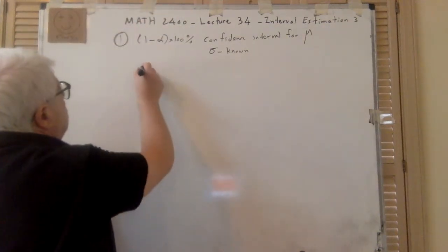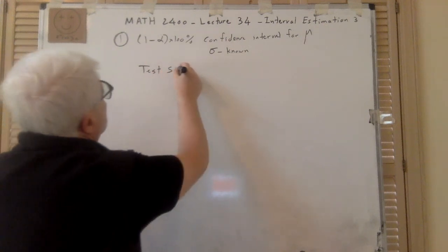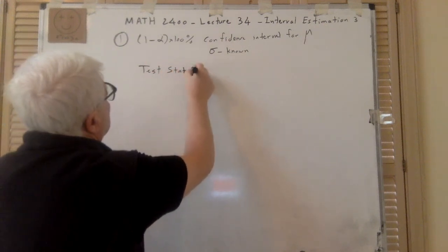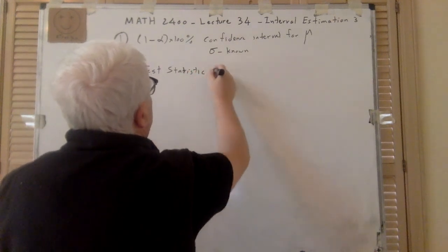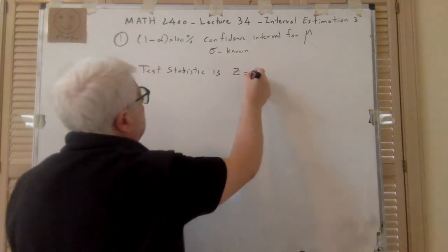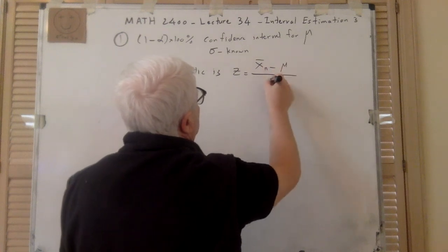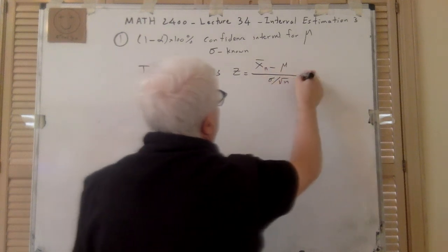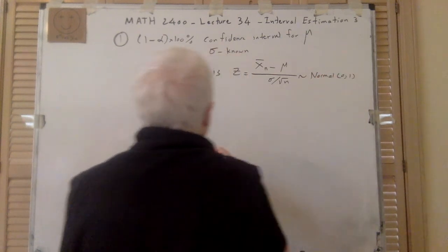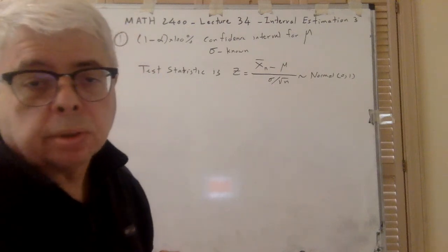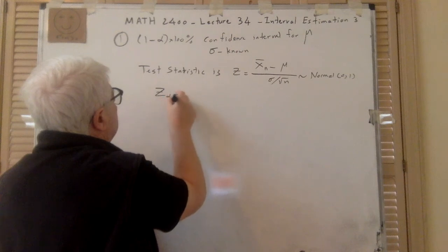So this situation — the test statistic here is Z equals (x̄_n minus μ) divided by (σ over square root of n). This is zero, zero. So what we have here is we need z_{α/2}.